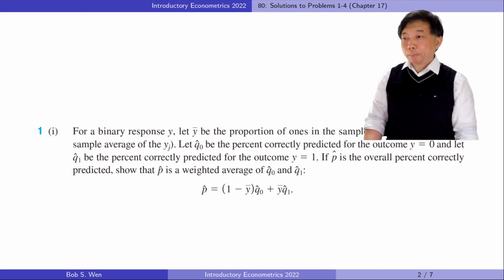Let's solve problem one. In part one, for binary response y, let ȳ be the proportion of ones in the sample. Let q₀ hat be the percent correctly predicted for the outcome y equals zero and let q₁ hat be the percent correctly predicted for the outcome y equals one. If p hat is the overall percent correctly predicted, show that p hat is a weighted average of q₀ hat and q₁ hat.